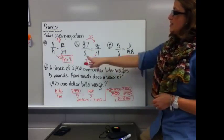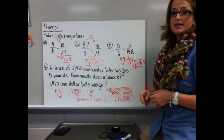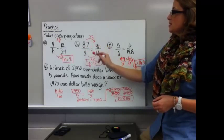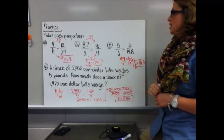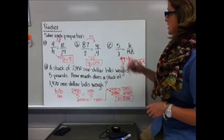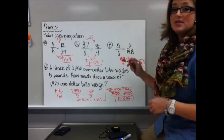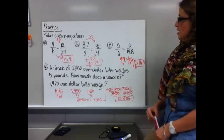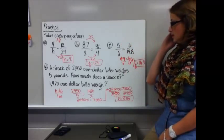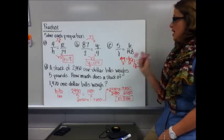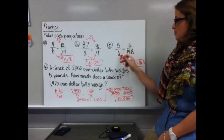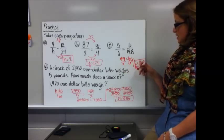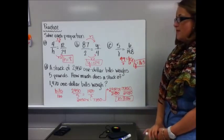For B, to go from 2 to 4 you multiply by 2, so 8.7 times 2 is 17.4. On C, to go from 5 to 6 there's no whole number multiplier, so cross-multiply: 5 times 19.8 is 99, and 6 times J is 6J. Divide both sides by 6 and J equals 16.5.